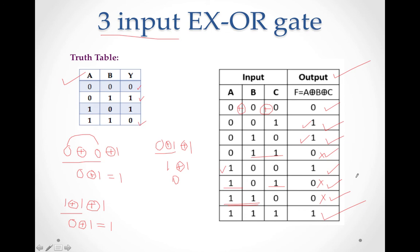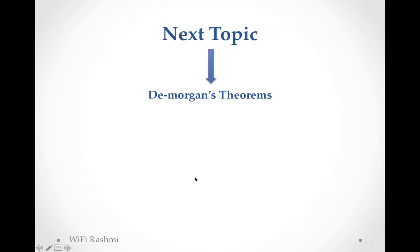Please do lots of practice for these gates because they create a lot of confusion. Take one gate at a time - first do basic gates (AND, OR, NOT), then NAND and NOR, then XOR. Learn the logic very well. In our next class we'll do De Morgan's theorem, which is really tough, but you can do it only after knowing the concepts of all seven gates.